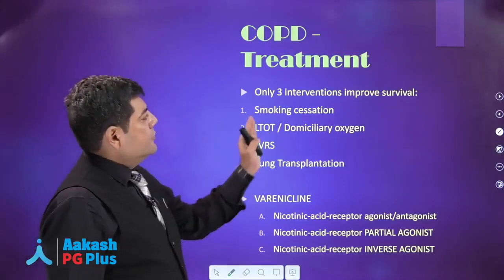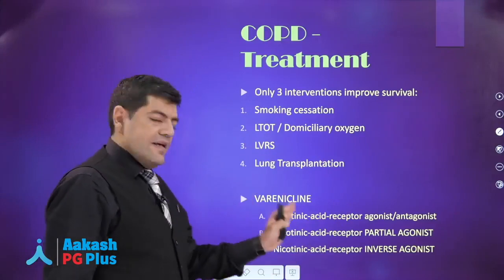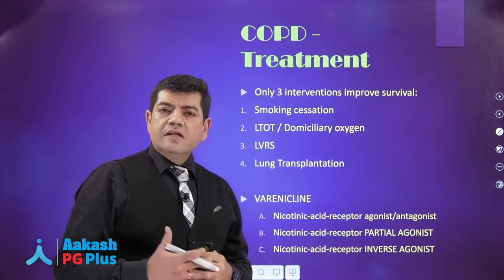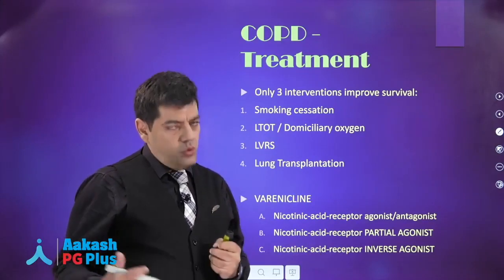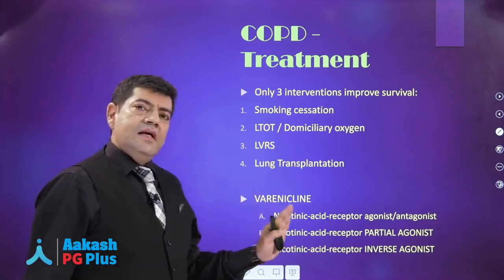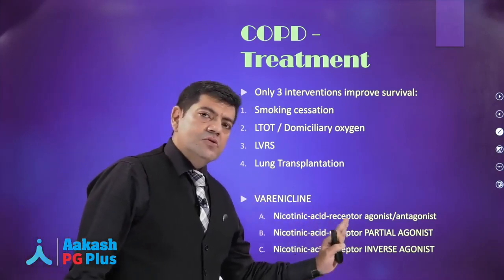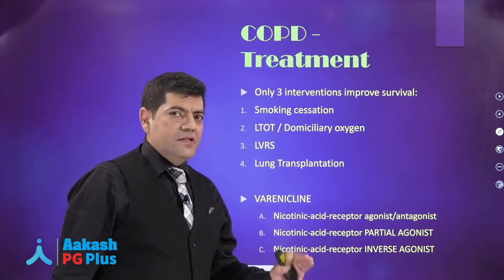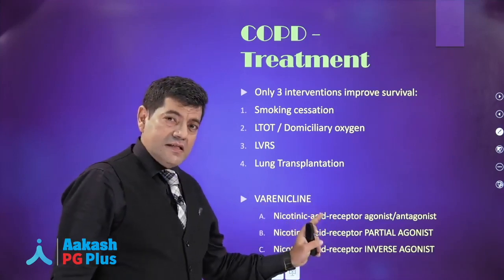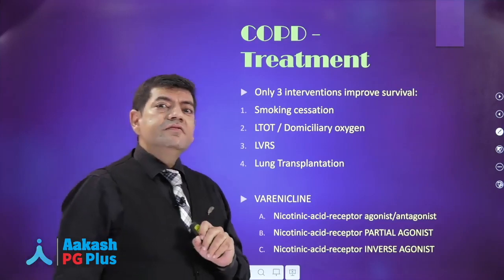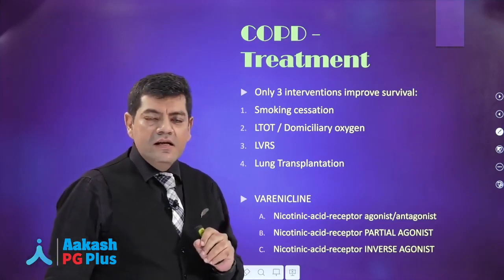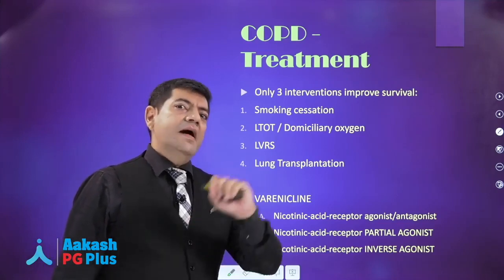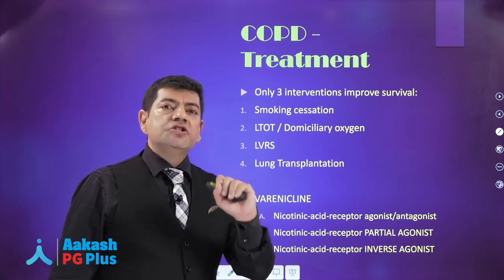While we are on the topic of smoking cessation, let us discuss varenicline. It is a relatively new drug. We want a drug that produces similar effects to nicotine but at a slower, lower potency. That is what varenicline does. At the same time, if the patient relapses and starts smoking again, that drug should disallow nicotine from binding to its receptor — that is what a partial agonist does.